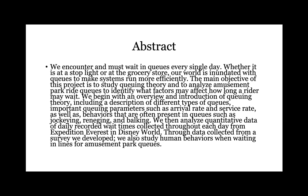I'm going to start with my abstract. We encounter and must wait in queues every single day, whether it is at a stoplight or at the grocery store — our world is inundated with queues to make systems run more efficiently. The main objective of this project is to study queuing theory and to analyze amusement park ride queues to identify what factors may affect how long a rider may wait. We begin with an overview and introduction of queuing theory, including different types of queues, important queuing parameters such as arrival rate and service rate, as well as behaviors often present in queues such as jockeying, reneging, and balking. We then analyze quantitative data of daily recorded wait times from Expedition Everest at Disney World, and through a survey we developed, we also study human behaviors when waiting in lines for amusement park queues.